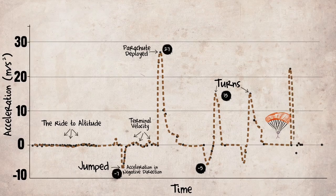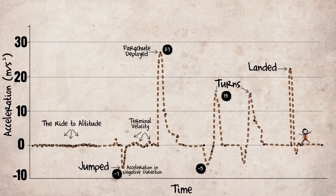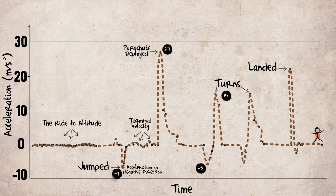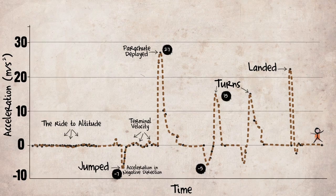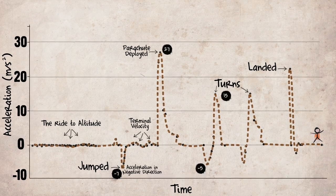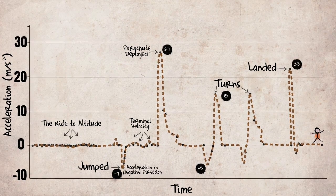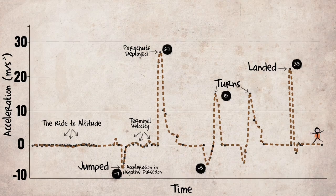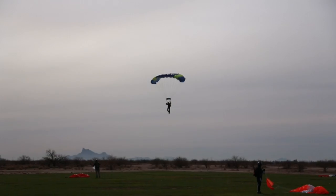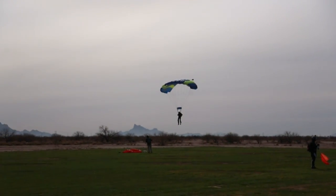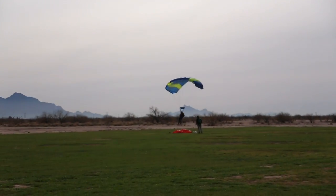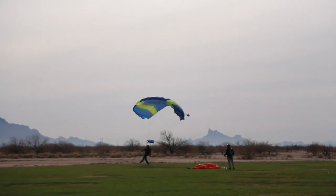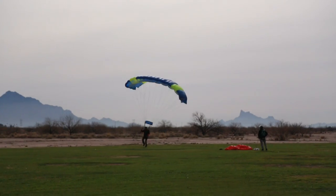Finally, landing actually had a much higher impact than I expected. The average over my seven jumps was actually an instant spike of about 23 meters per second squared — even though when Jonas filmed the first one, I had a very smooth landing.